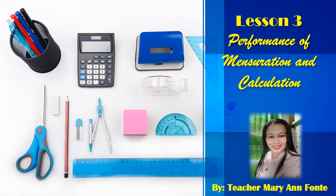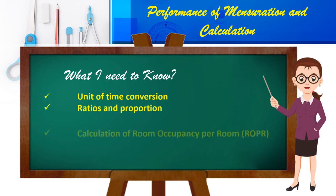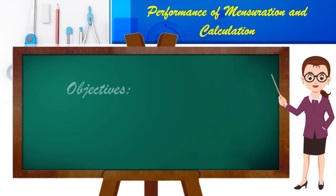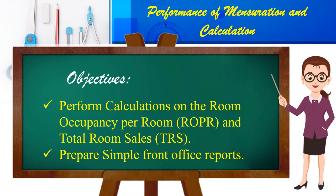We are now in Lesson 3. Today we are going to learn about unit of time conversion, ratios and proportion, and calculation of room occupancy per room or the ROPR, and the total room sales or the TRS. Our objectives for today's lessons are: first, perform calculations on the room occupancy per room (ROPR) and the total room sales (TRS), and prepare simple front office reports.